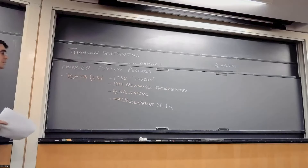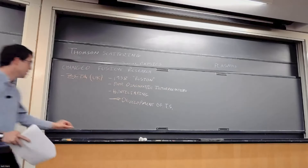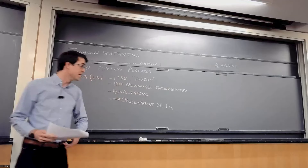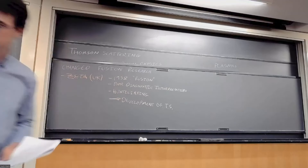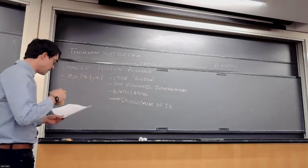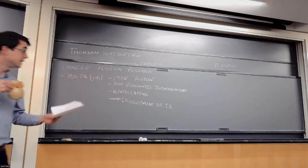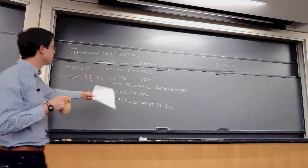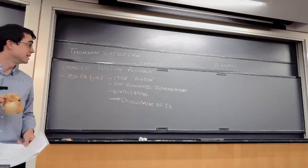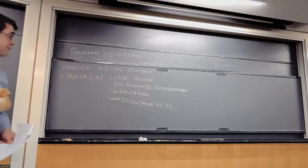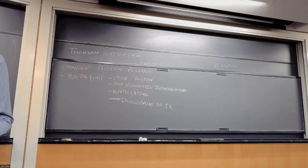The problem with the Zeta machine is it was far too cold for fusion to be occurring. The British should have realized this before they claimed fusion was occurring there. But they did develop the Thomson scattering diagnostic with some of the first lasers. The laser was just invented in 1961, so they didn't really have a chance before then — but after that there was really no excuse.